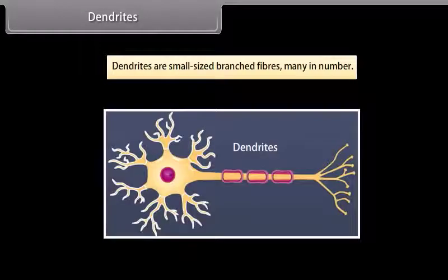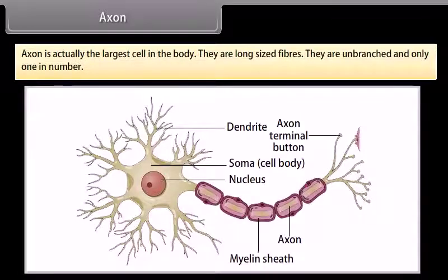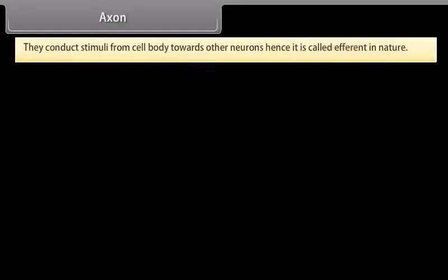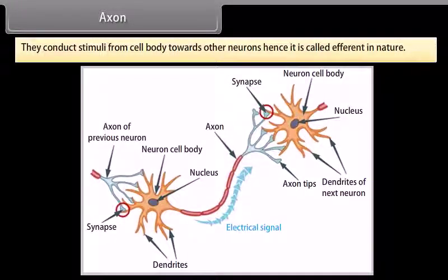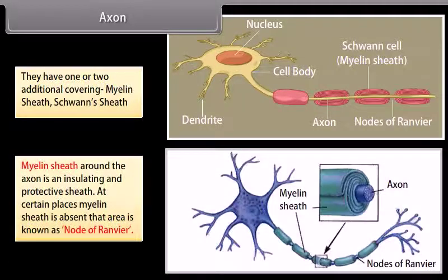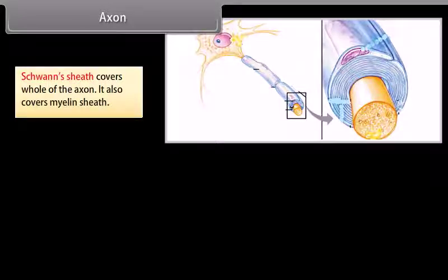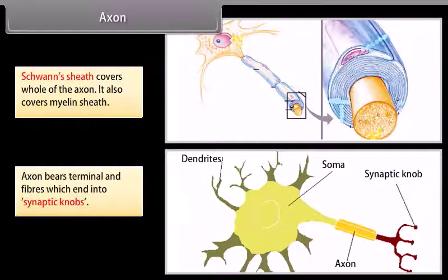Dendrites are small-sized branched fibers, many in number. They conduct stimuli to the cell body, hence called afferent in nature. Axon is the largest fiber of the cell; they are long-sized, unbranched, and only one in number. They conduct stimuli from the cell body towards other neurons, hence called efferent in nature. They have one or two additional coverings: myelin sheath and Schwann sheath. Myelin sheath around the axon is an insulating and protective sheath. At certain places, myelin sheath is absent and that area is known as the node of Ranvier. Schwann sheath covers the whole axon, including the myelin sheath. Axon terminals are fibers which end into synaptic knobs.